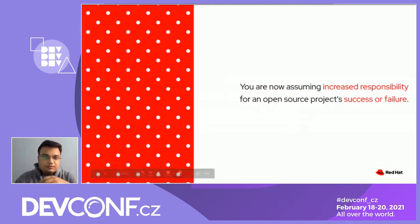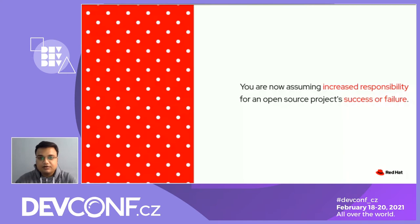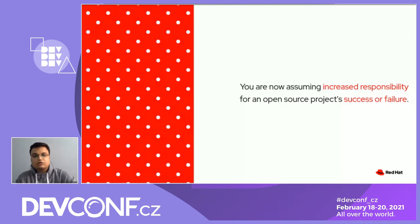As a contributor to an open source project, your duties may be more or less straightforward — fix bugs, answer questions in the project's channel, and so on. When assuming a position of leadership, your role becomes more comprehensive. You may have to drive technical direction, speak with authority for the project in public venues such as conferences, initiate programs to recruit more project members, or change the project's processes and policies. In short, you are now assuming increased responsibility for a project's success or failure.